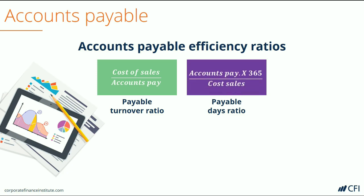Now let's look at the payable days ratio. It's calculated by taking the accounts payable balance at the end of the period or an average, multiplying it by 365 days in the year, or however many days are in the period being examined, and then dividing that by the cost of sales or the cost of goods sold. That indicates how many days on average it takes for the company to pay those bills.